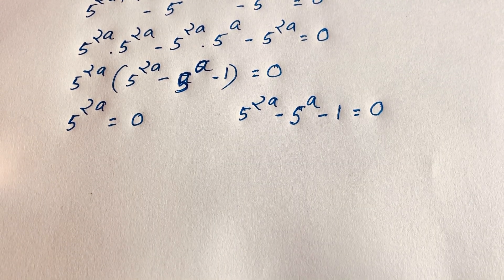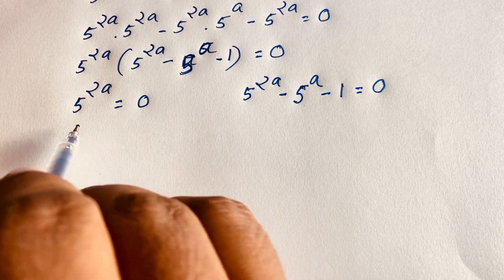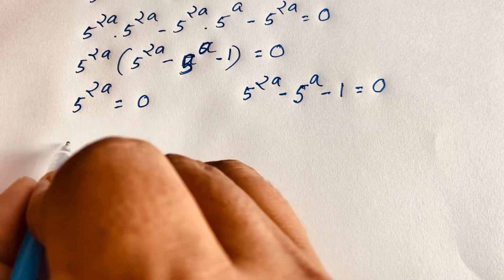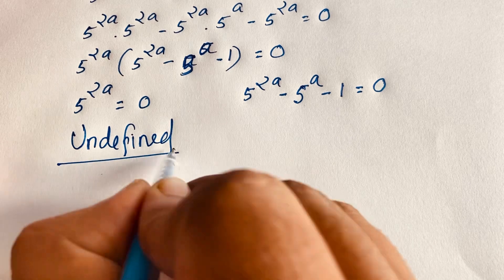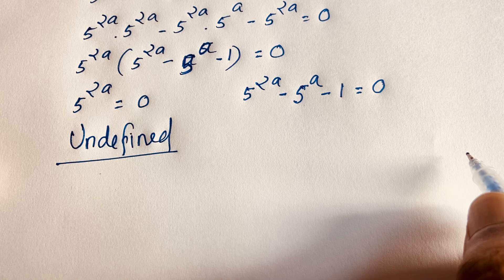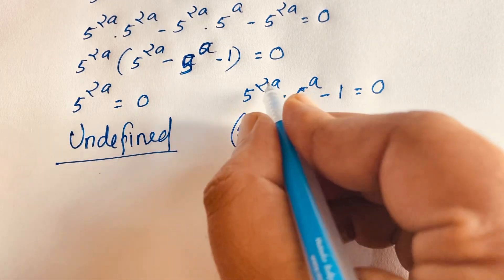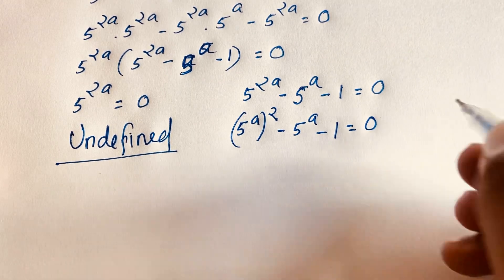It's okay. Now, here 5 to the power 2a is equal to 0 — if we take any value of a, 5 to the power 2a will find some value but it is not 0. So, it is undefined. But in the second expression, we have: 5 to the power 2a minus 5 to the power a minus 1 is equal to 0. How to solve this exponential equation? We know that by exponential law, 5 to the power a, whole to the power 2, and we will find out this value: minus 5 to the power a minus 1 equals 0.